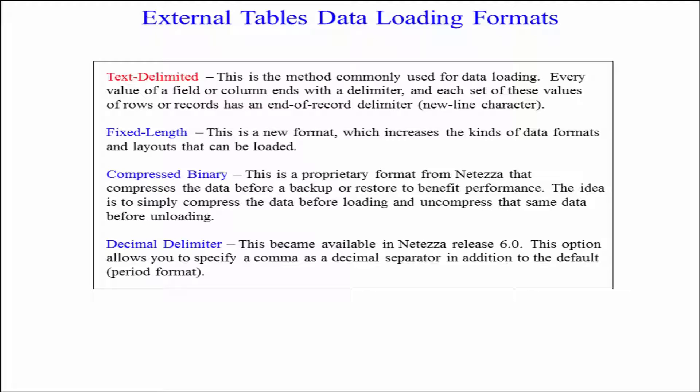And here we've got text delimited. This is a method commonly used for data loading. Every value of a field or column ends with a delimiter. And each set of these values of rows or records has an end of record delimiter. Sometimes you'll call that the new line character. Well, of course, you can also have fixed length. This is a new format which increases the kinds of data formats and layouts that can be loaded.